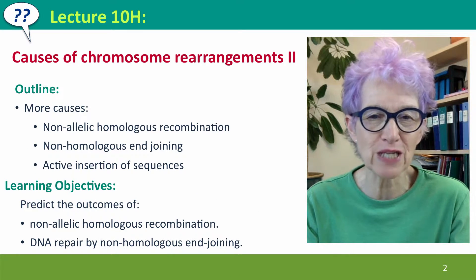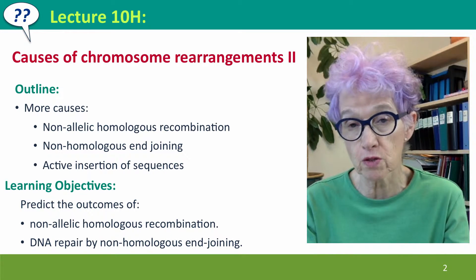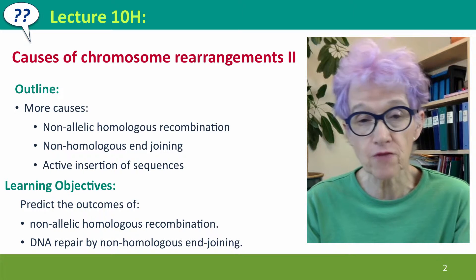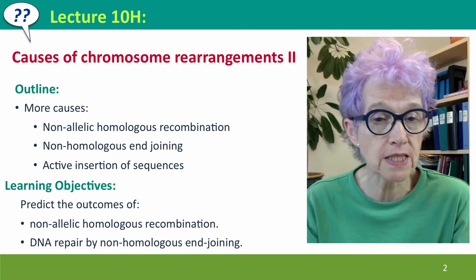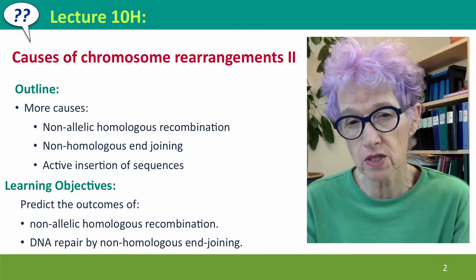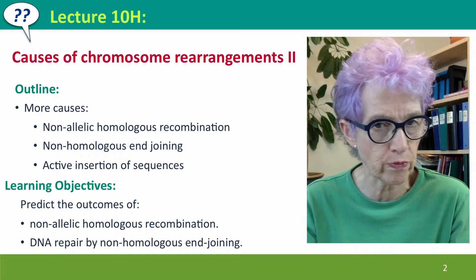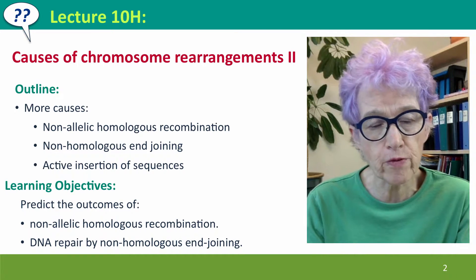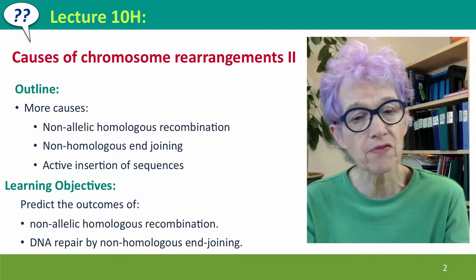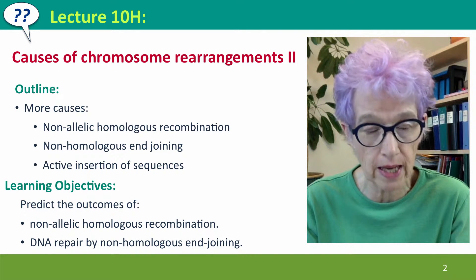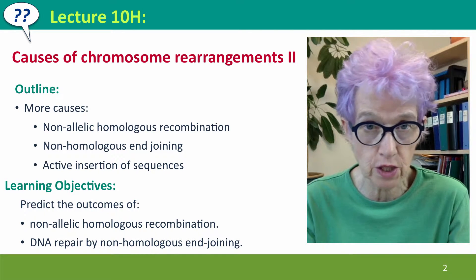Welcome back to lecture 10H of Useful Genetics, where we're continuing our discussion of the causes of chromosome rearrangements. Instead of thinking about DNA polymerase errors, as we did in the previous lecture, we're going to consider processes that are independent of DNA polymerase: non-allelic homologous recombination, which is promoted by sequence repeats in the genome; non-homologous end-joining, which is basically a DNA repair process; and the active insertion of mobile genetic elements, the sequences which are themselves the cause of all the repeated sequences in the genome.